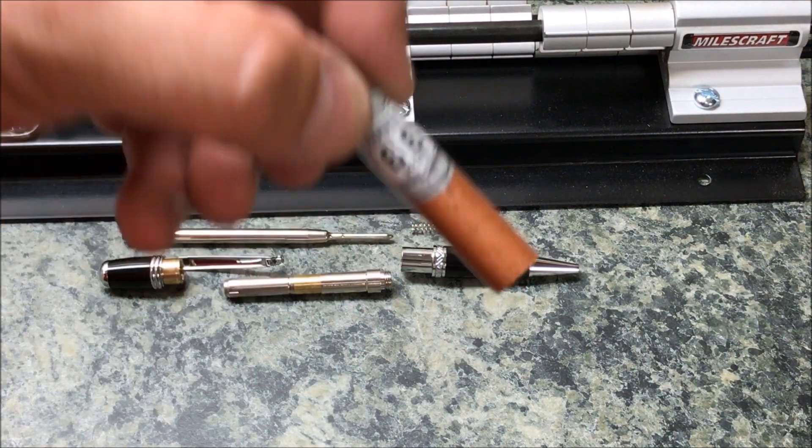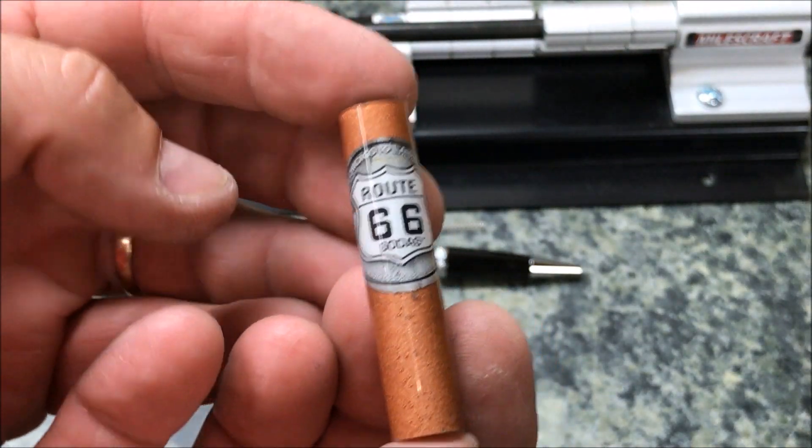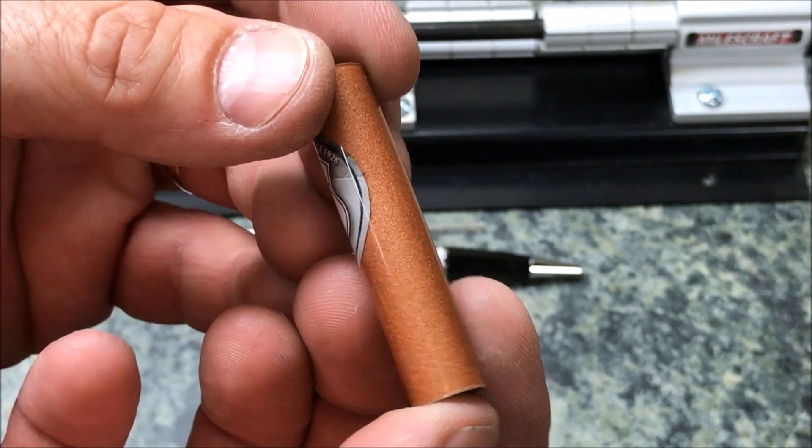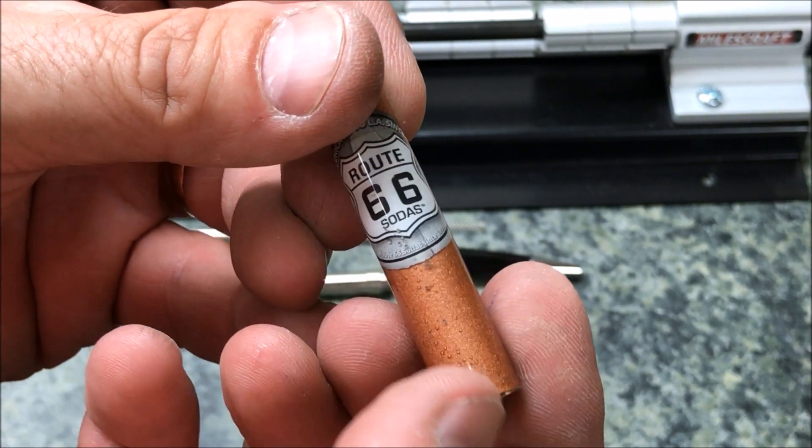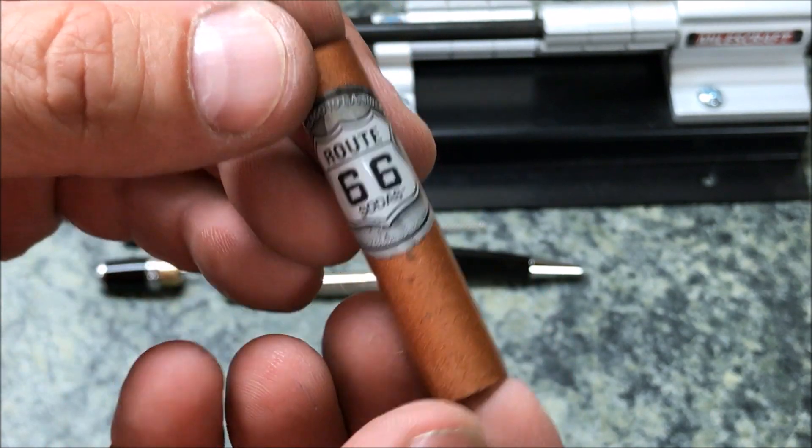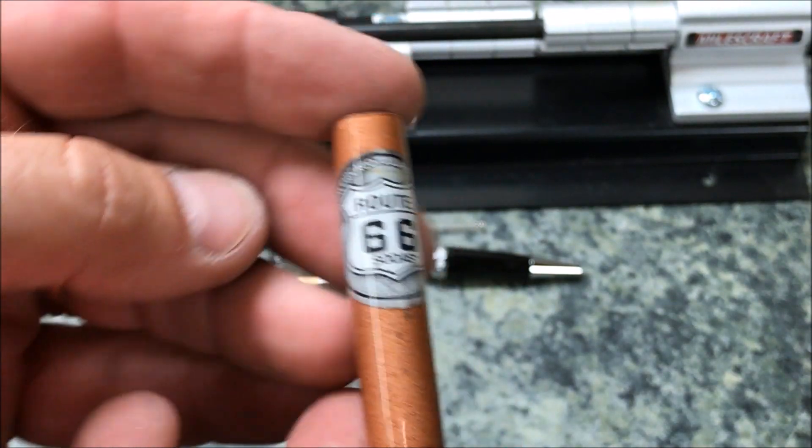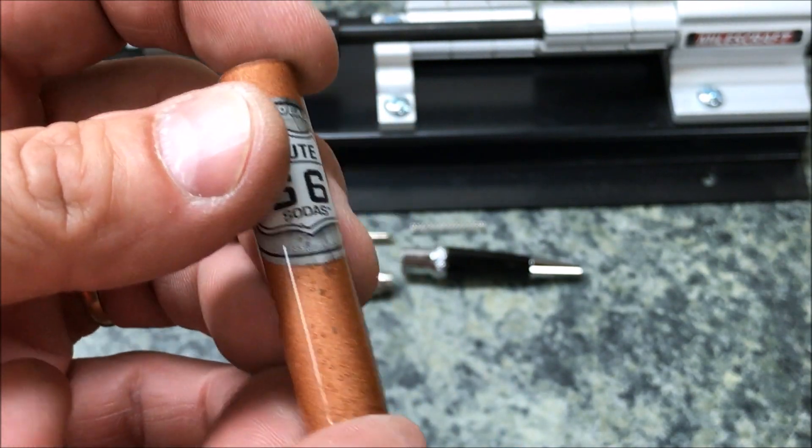Considering how rough this blank was when we started, I think it turned out pretty darn decent. There are still a few bubbles in the resin - they're below the surface - but this is a root beer blank. And what does root beer have in it? Lots and lots of bubbles. So I think they kind of add to the overall look of the blank. I'm fairly happy with it.